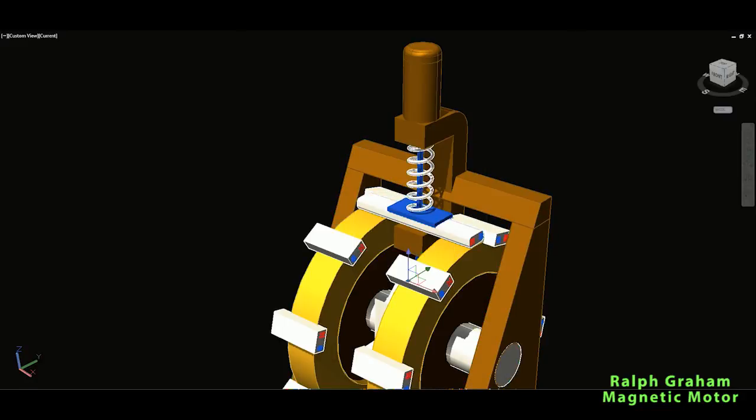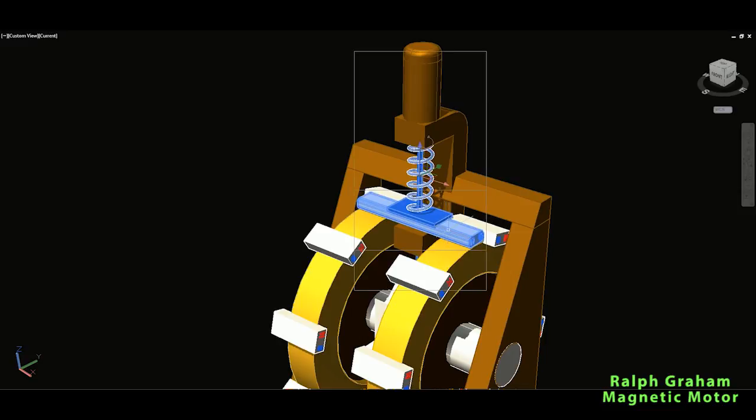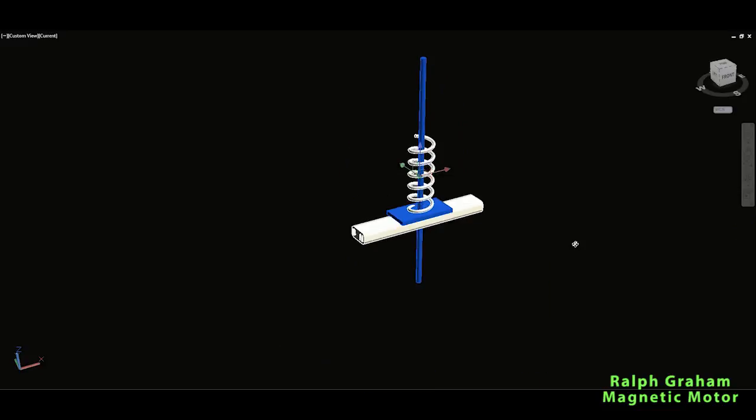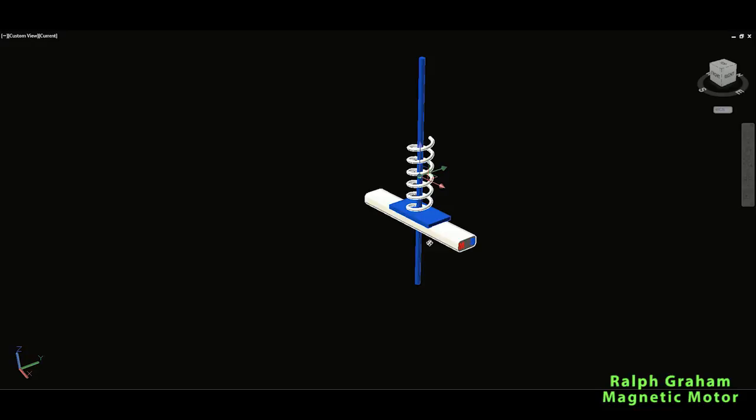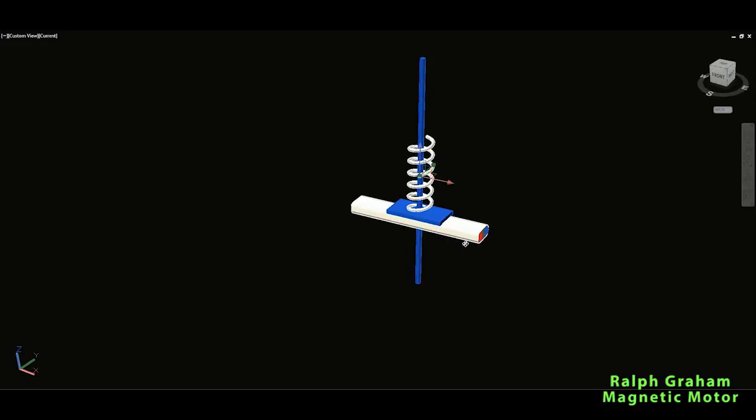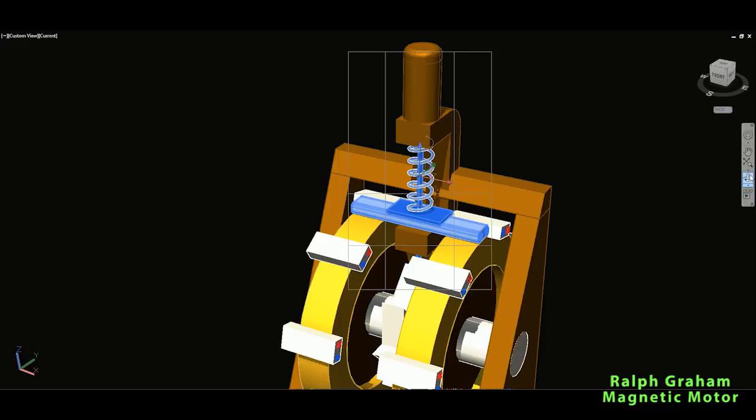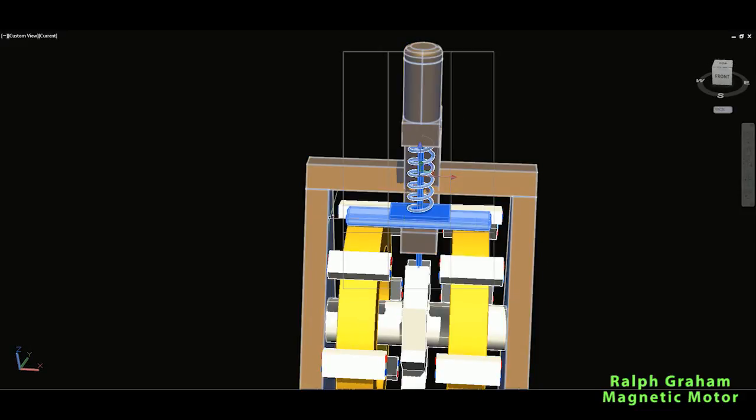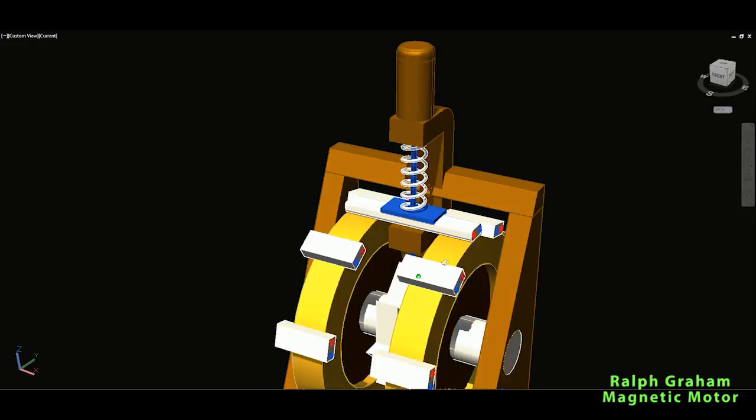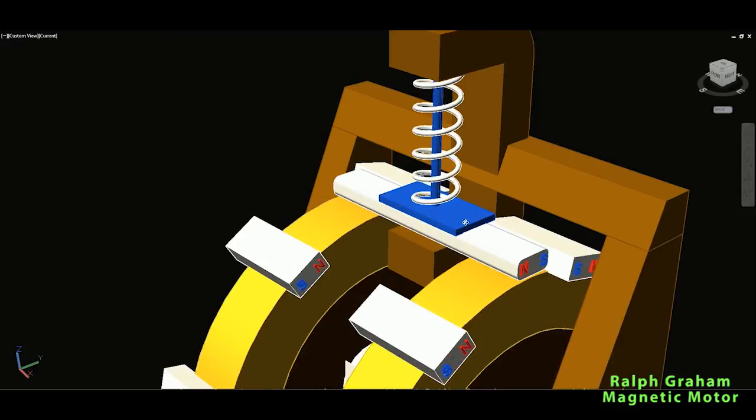So this magnet, this permanent magnet here on the stator is a very wide magnet. You can see it's very wide, much wider than the magnets on the rotor, to push both of them. It goes a little more than half of the rotor magnets and it does a pretty interesting job here.